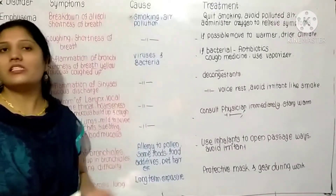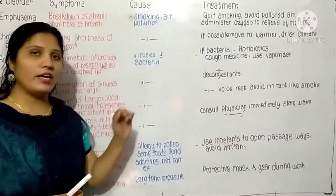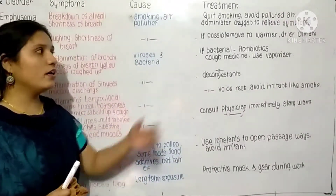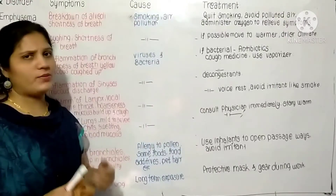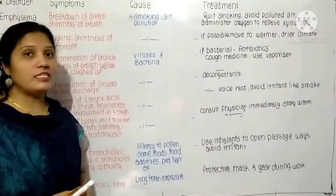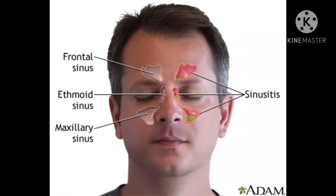For treatment of sinusitis, if it is bacterial the person has to take antibiotics, cough medicine, and a vaporizer. Various sinuses are located in the face region, such as the frontal sinus and the ethmoid sinus.